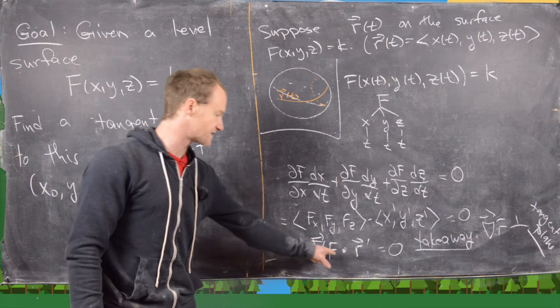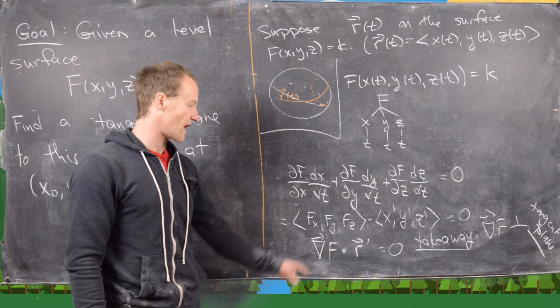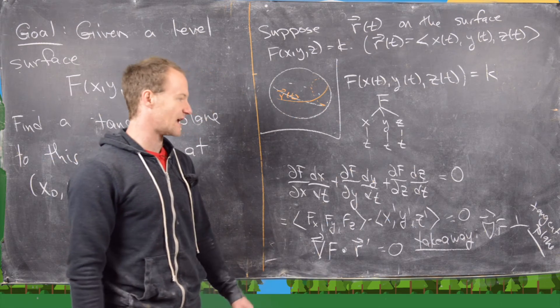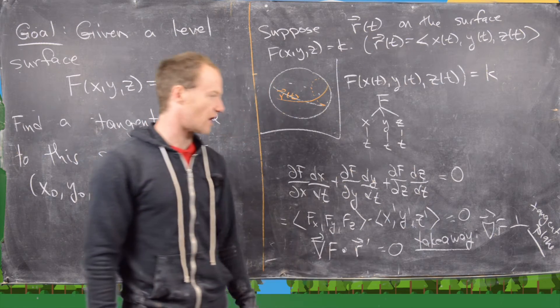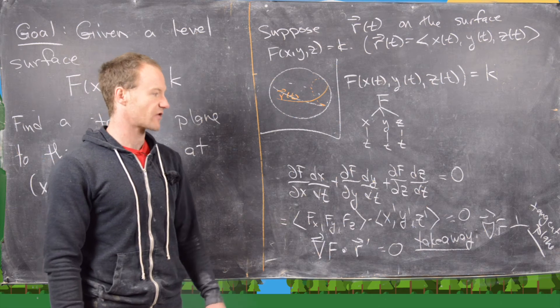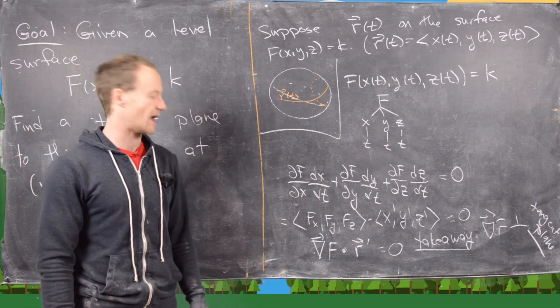but this r is an arbitrary curve, so we can get all tangent vectors by looking at all such r. But then when we dot this gradient with the r prime and we get zero, that's the same thing as saying this gradient is orthogonal to all tangent vectors. In other words, it is normal to the plane.